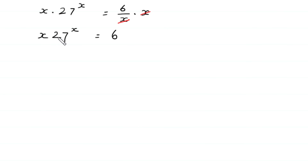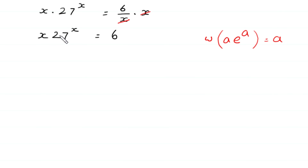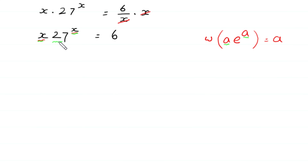Now we want to use the Lambert W function, where W of (a times e to the power a) is equal to a. To use the Lambert W function, we must have the same expression in both places. Here we have x and here we have x, but we must have e in place of this 27.